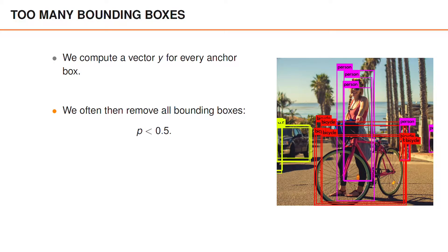The standard procedure is to then remove all bounding boxes for which the network has told us that the probability that it's an object is smaller than 0.5. Once we've done that we're often left with several bounding boxes for each object in the image.